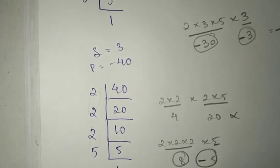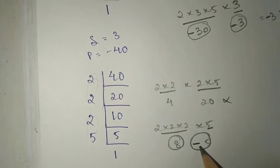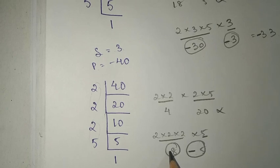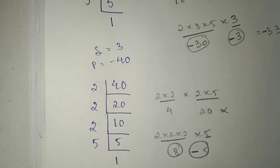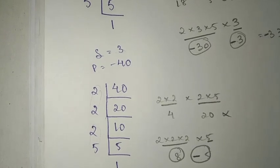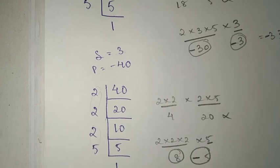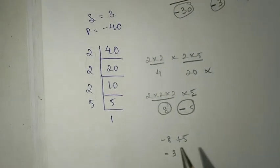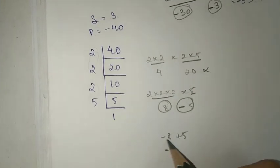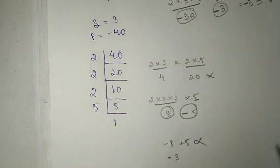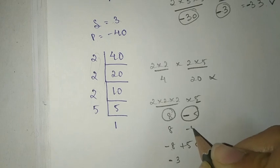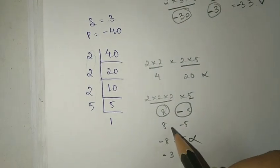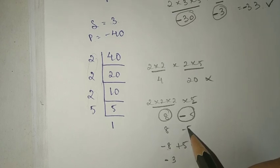If you multiply 8 and minus 5 you get minus 40. When you add them, 8 plus minus 5 gives 3. If we used minus 8 plus 5, we would get minus 3, which is not what we want. So we need the 8 to be positive. Therefore the two numbers are 8 and minus 5.